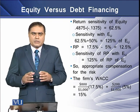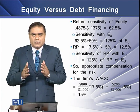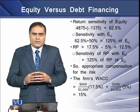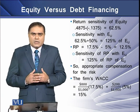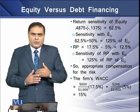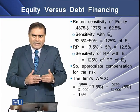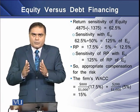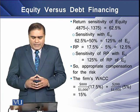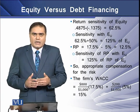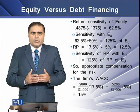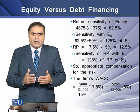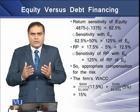We can also determine the firm's weighted average cost of capital using the data we have in this scenario. The weighted average cost of capital equals the sum of the products of the proportional debt and equity weights with their respective costs. Putting the values into the WACC model, the value comes to 15%, which is again equal to the unlevered cost of equity of 15% seen in our earlier lesson.